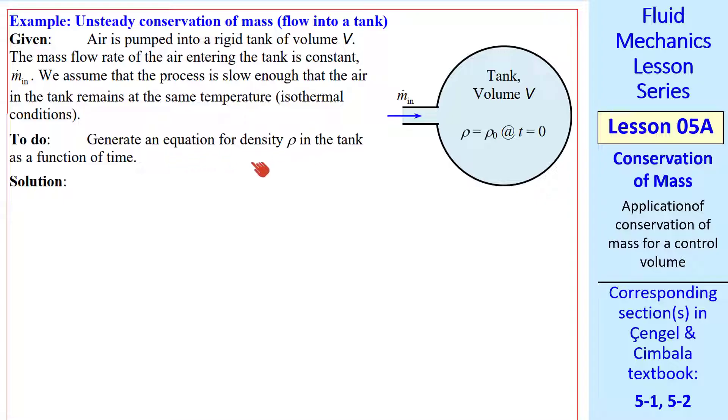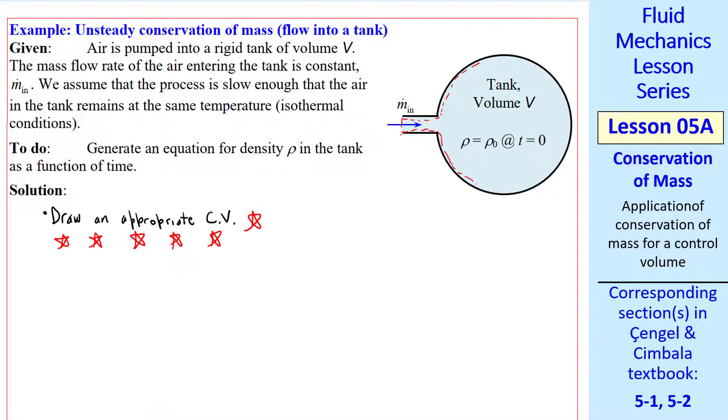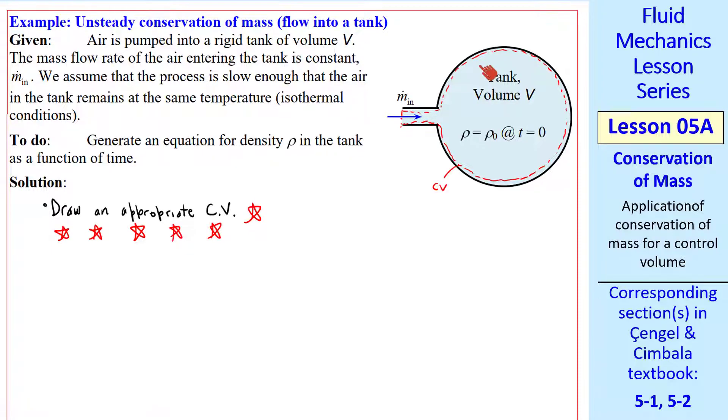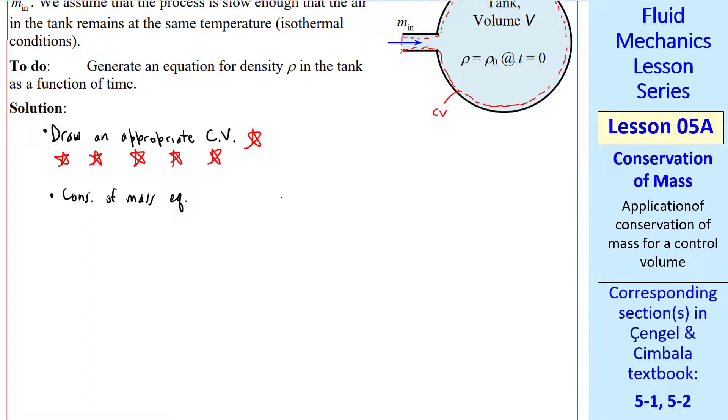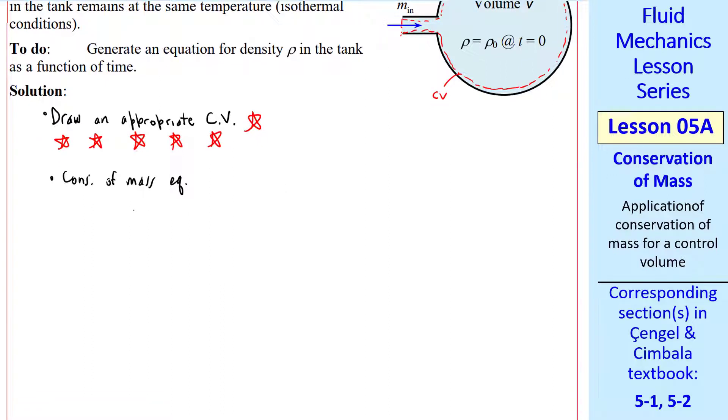First we draw an appropriate control volume. You'll get tired of me saying this, but this is really the most important step in any of these kind of control volume problems. In this case, I draw a control volume along the inside wall of the tank and slicing across the inlet. This is a fixed, non-moving control volume. Now we use an appropriate conservation of mass equation. In this case it's unsteady so we must keep the unsteady term, d dt of this integral over the control volume equals sigma m dot in minus sigma m dot out. Notice that I used the simplified version of this control surface integral since we have well-defined inlets and outlets. In fact, in this case we have no outlet. So that term goes away.